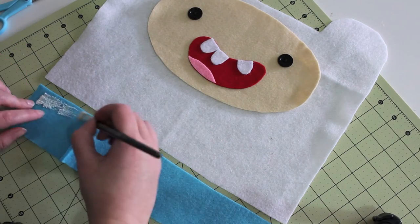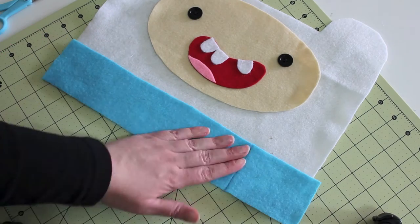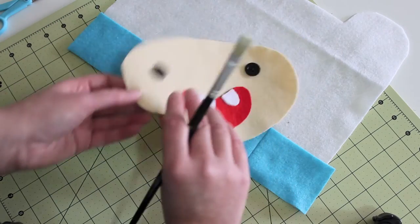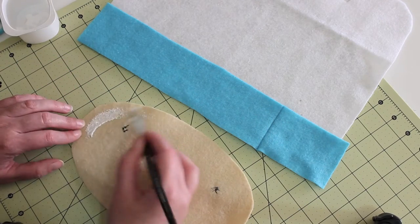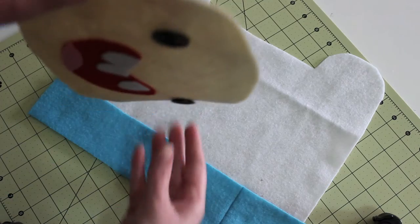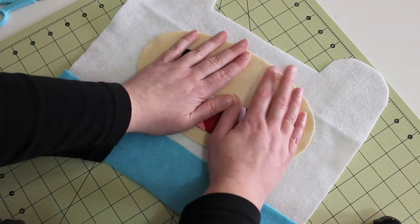Once Finn's face is completed, glue on the blue strip that will be Finn's shirt along the bottom of the white hat piece. Next, take Finn's face and apply a good amount of glue to the back. Place this piece on top of the white hat piece, ensuring that it is centered.